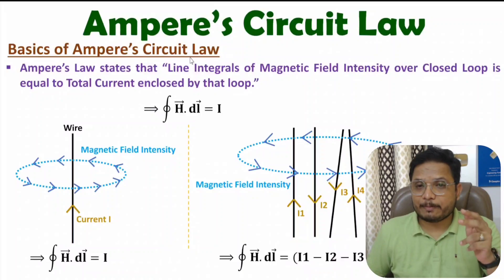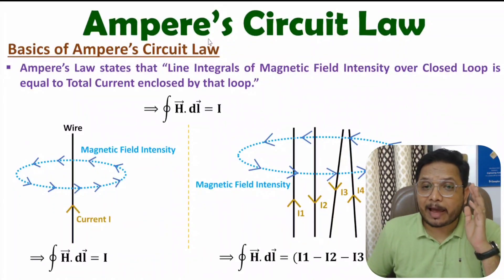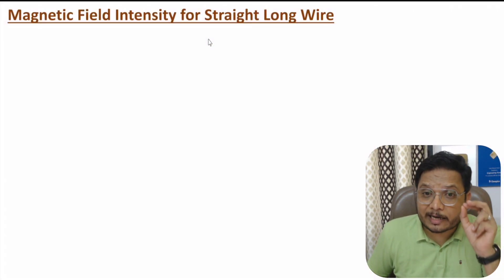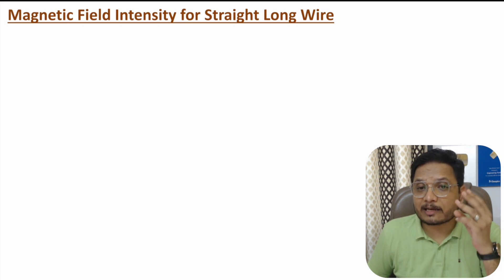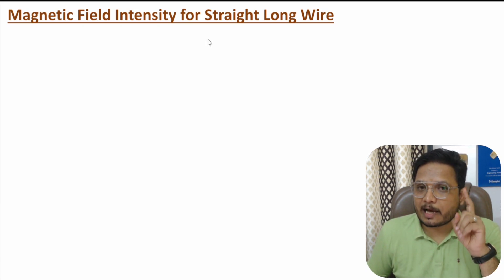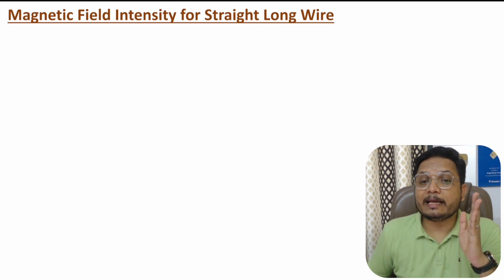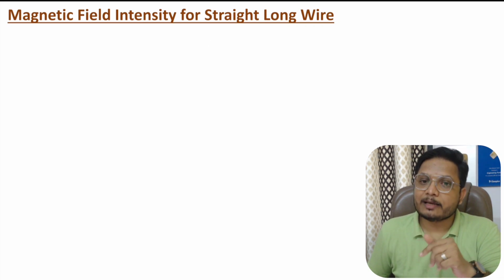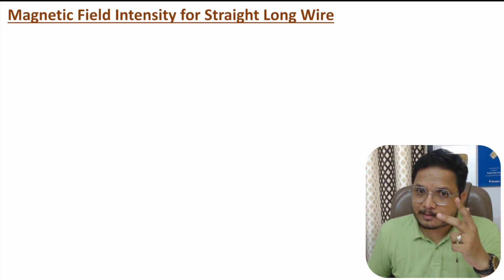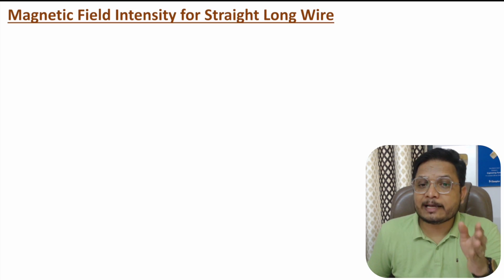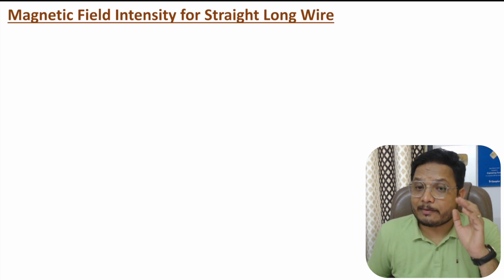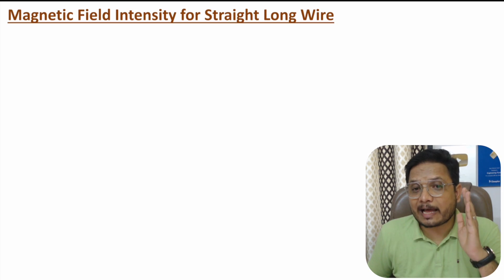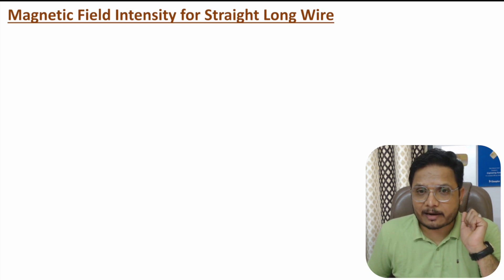Now I'll explain the calculation of magnetic field intensity due to a straight long wire. I will consider three different cases. In the first case, I will calculate magnetic field intensity outside the wire. In the second case, on the surface of the wire. And in the third case, I will explain magnetic field intensity calculation inside the wire.